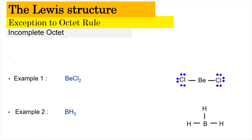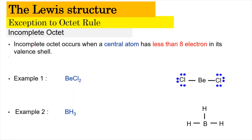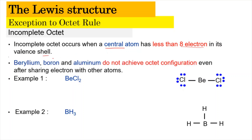For exception to the octet rule number 1, which is the incomplete octet, it can occur when the central atom has less than 8 electrons in its valence shell. Examples of central atoms include beryllium (Be), boron (B), and aluminum. These three elements do not achieve octet configuration even after sharing electrons with other atoms.